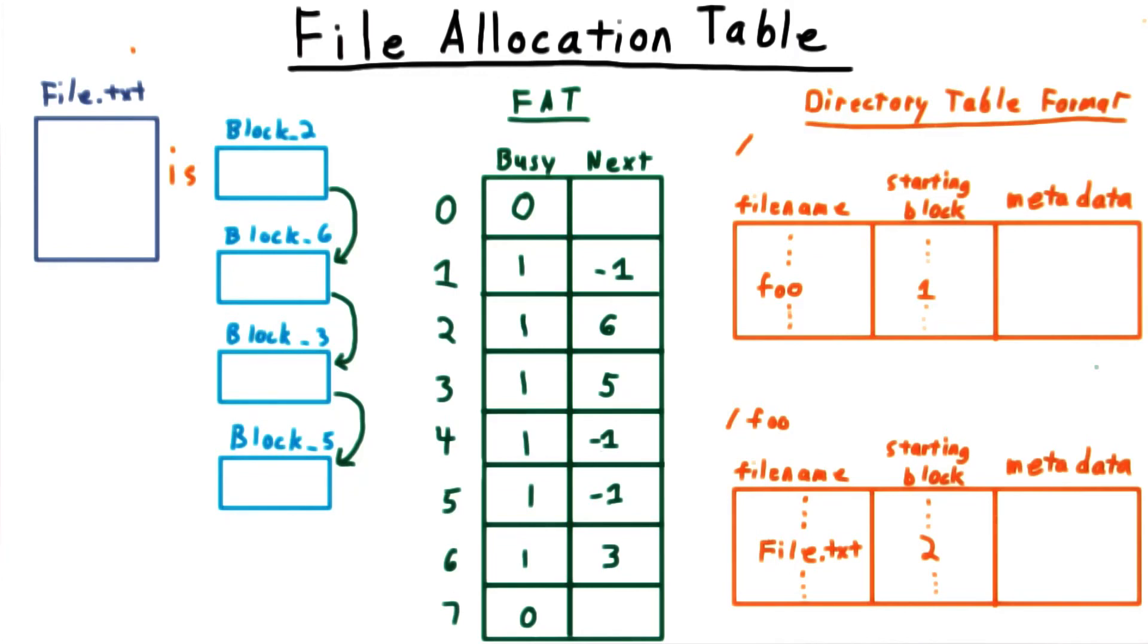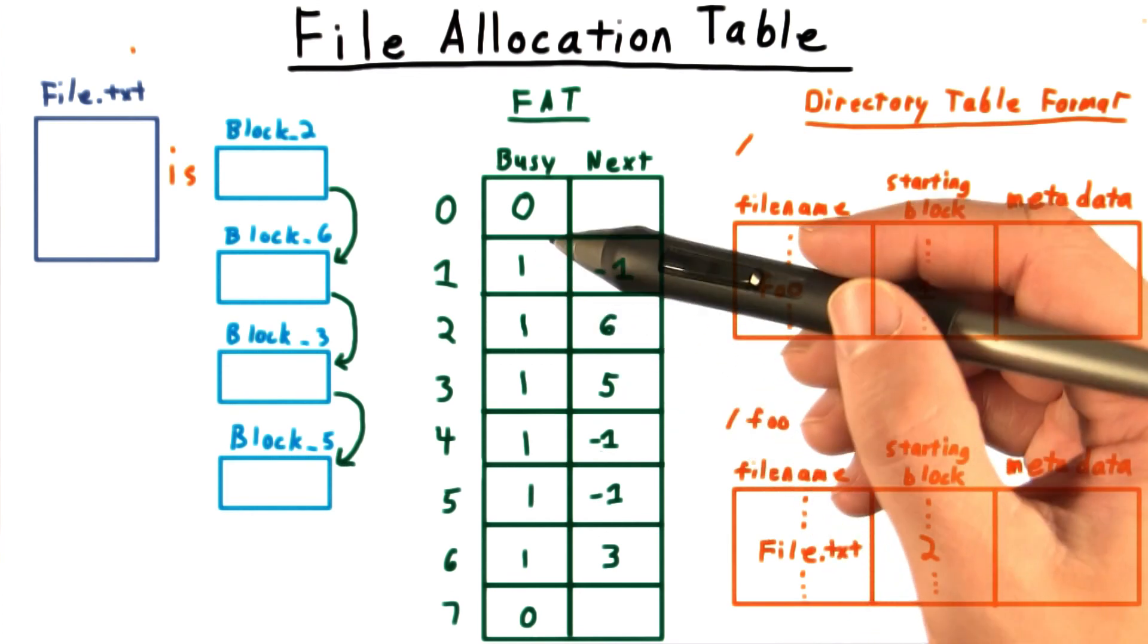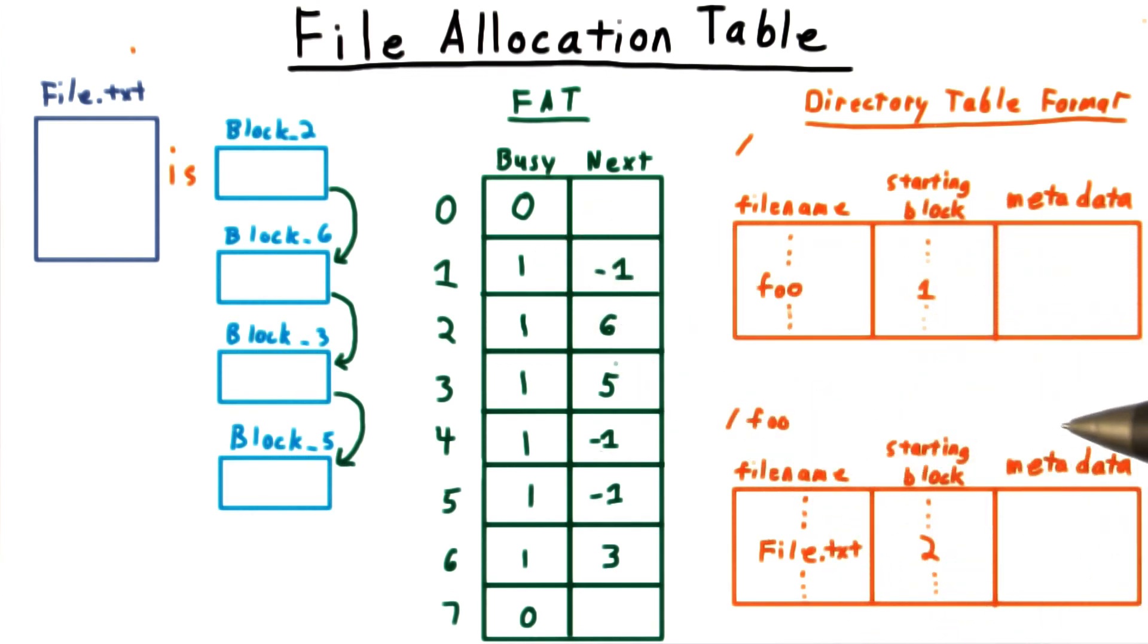So now that we understand how the FAT format works, let's consider its strengths and weaknesses. It is easy to create a new file, since we just need to adjust the directory table of the parent directory and set the busy bit in the FAT for the starting block.